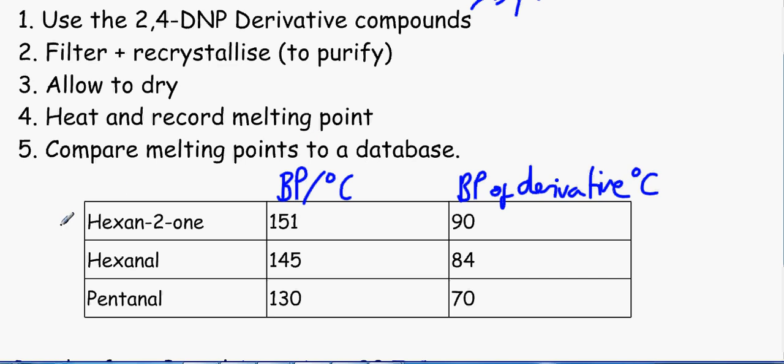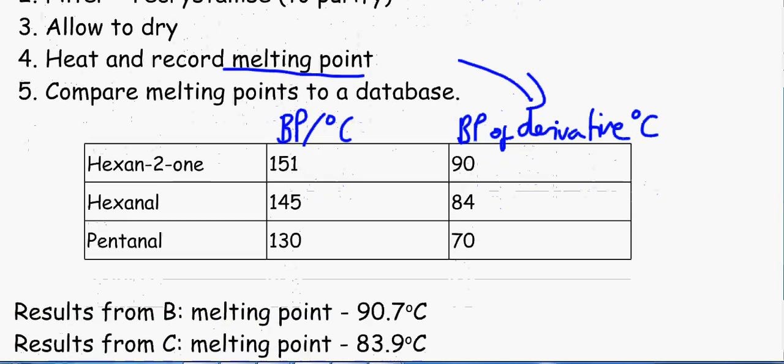So let's say, for example, we have this table. This table is actually not accurate. I just made these figures up, apart from the first one where I got from the OCR book. And what we do, we just record the melting points. Remember, we're looking at the derivative, the 2,4-DNP derivative one, not this.